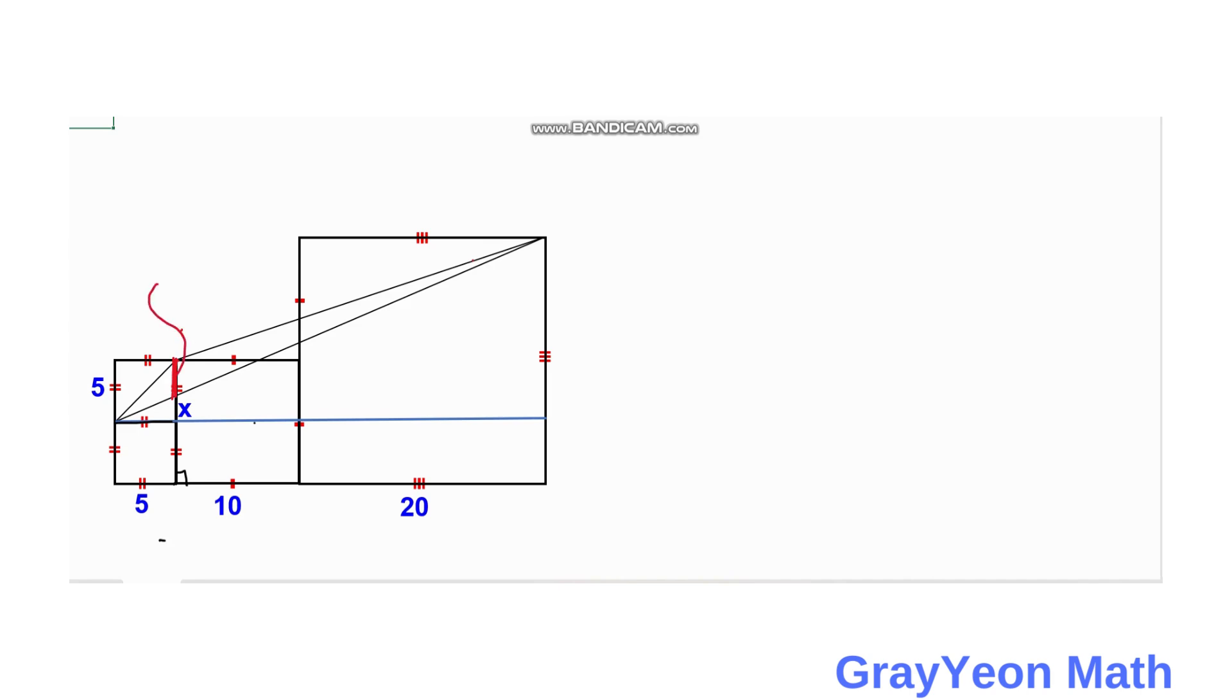This red line we consider as the base of the two triangles, the longer one and this shorter one. If we are going to find the base, then we can simply calculate the whole area with these respective heights of these two triangles.